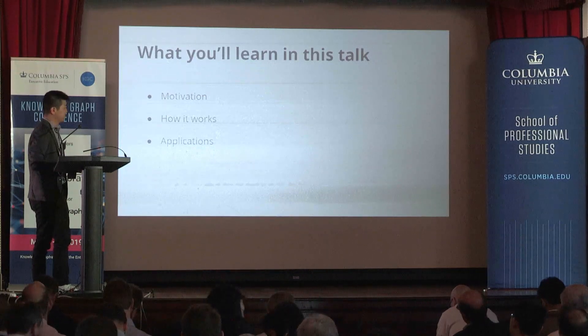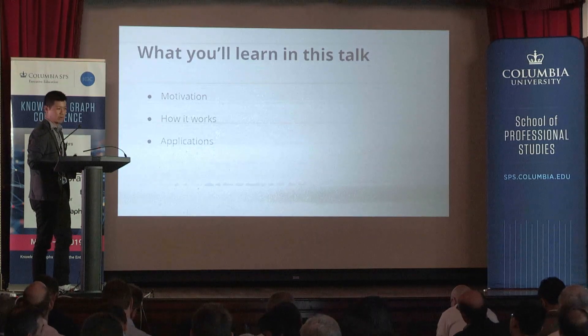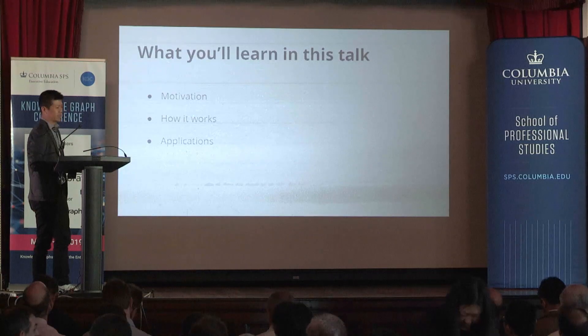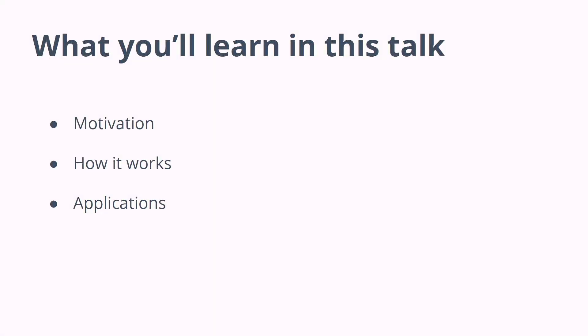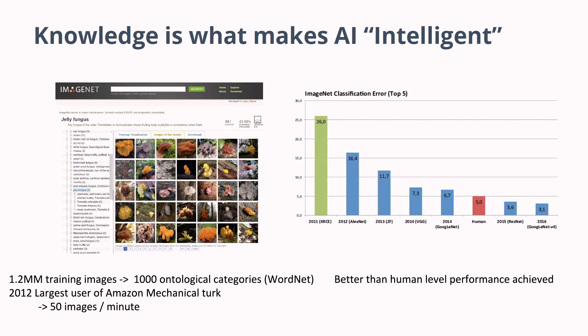Our knowledge graph is fully in production. We have over 400 customers that use our knowledge graph. I come to knowledge graphs from the background of machine learning research. I was a grad student at Stanford, and around that time in our lab, they built this dataset called ImageNet.